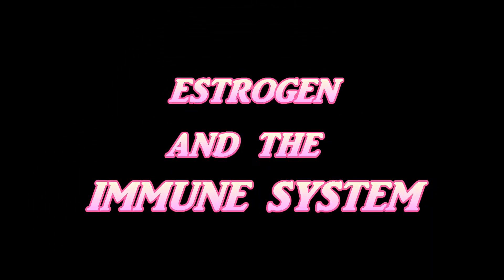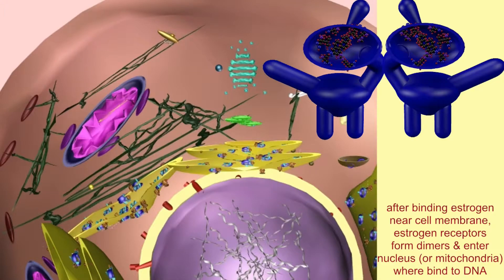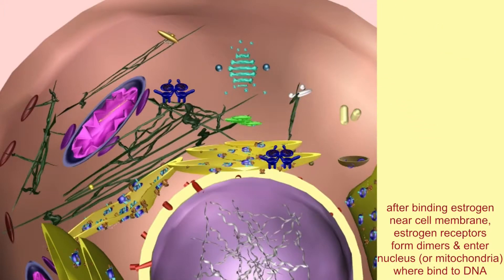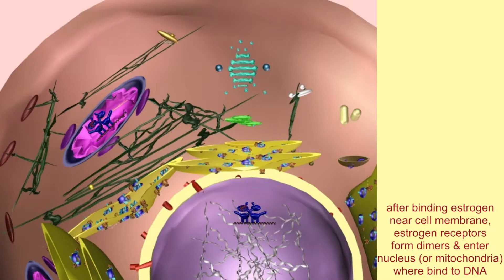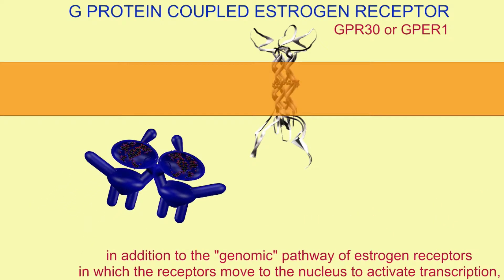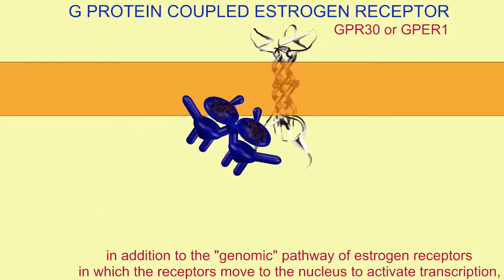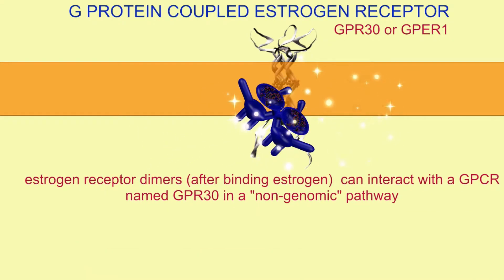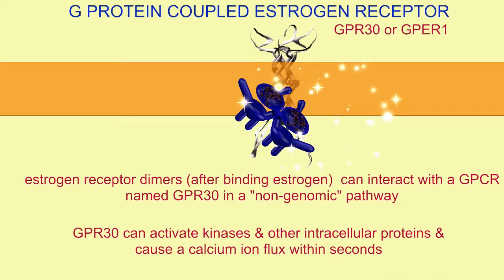Estrogen is a hormone which can affect cells both by binding to receptors which then move to the nucleus and affect the expression of genes, and also by binding to receptors on the cell membrane — a G-protein coupled receptor — causing instantaneous changes.